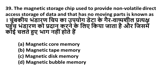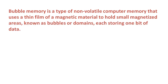Question 39: The magnetic storage chip used to provide non-volatile direct access storage of data with no moving parts is known as — Option A: Magnetic core memory, Option B: Magnetic tape memory, Option C: Magnetic disk memory, Option D: Magnetic bubble memory. The right answer is Option D — magnetic bubble memory. Bubble memory is a type of non-volatile computer memory that uses a thin film of magnetic material to hold small magnetized areas known as domains or bubbles, each storing one bit of data.